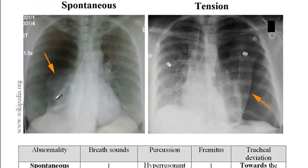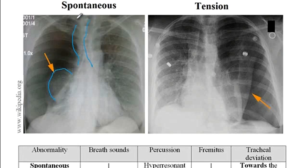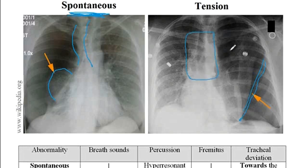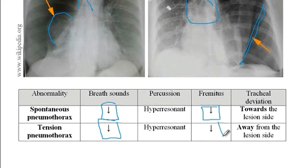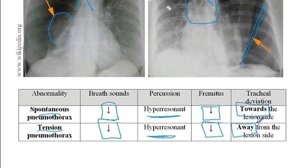With spontaneous pneumothorax the lung collapses on itself, and the trachea deviates towards the lesion site — though in reality this may not always be visible since the space opened is not large. For exam purposes, know that with spontaneous pneumothorax the trachea shifts towards the lesion site. With tension pneumothorax, air has entered the pleural cavity pushing everything away, so the trachea and mediastinum shift away from the lesion site.